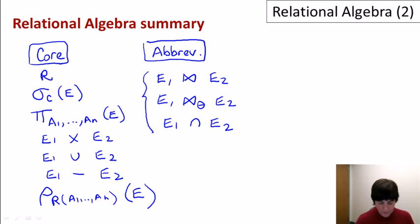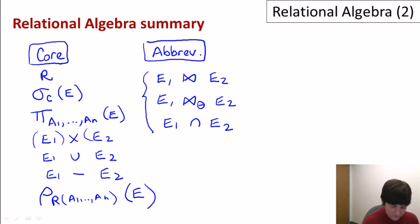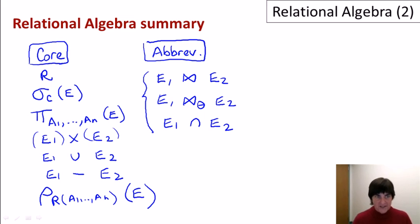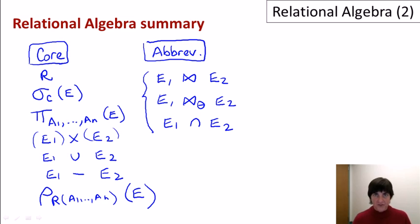Parentheses are used in relational algebra expressions for disambiguation, similarly to arithmetic expressions. To conclude: relational algebra is a formal language based on sets, set operators, and other operators that combine data from multiple relations. It takes relations as input, produces relations as answers, and forms the formal foundation of implemented relational database management systems.